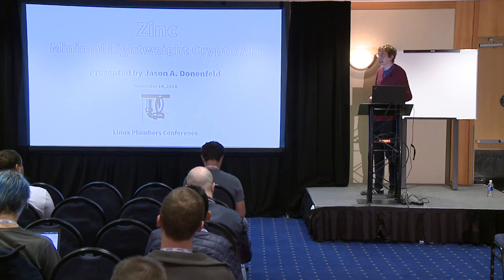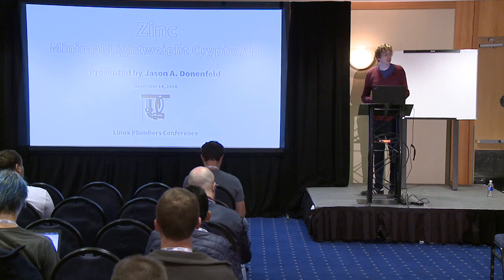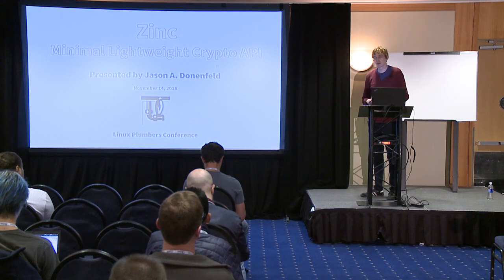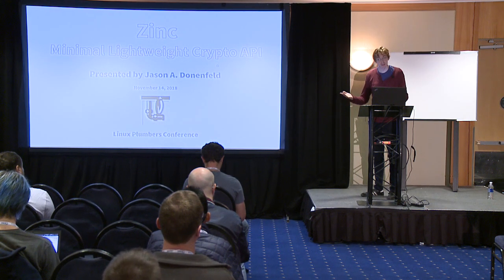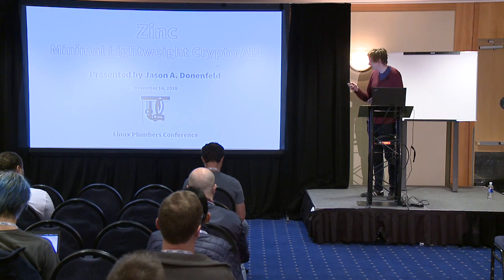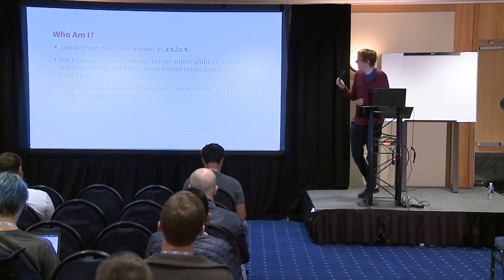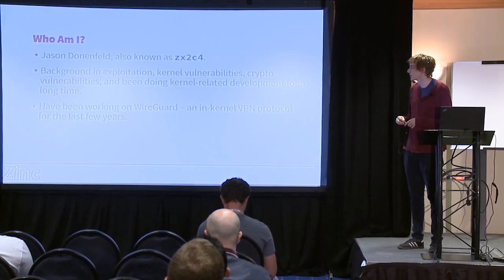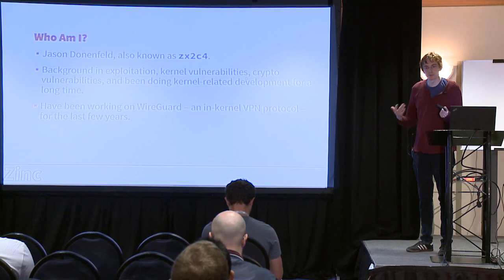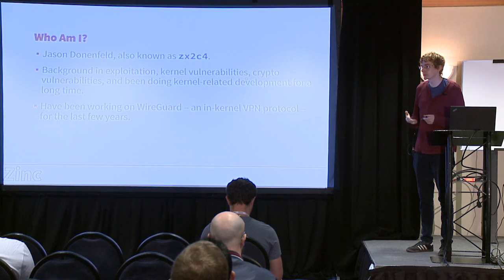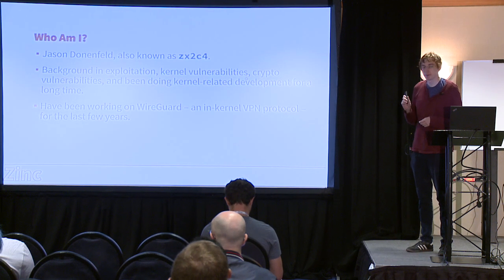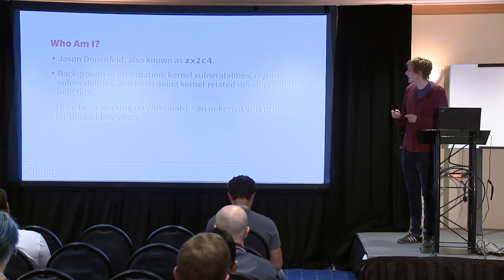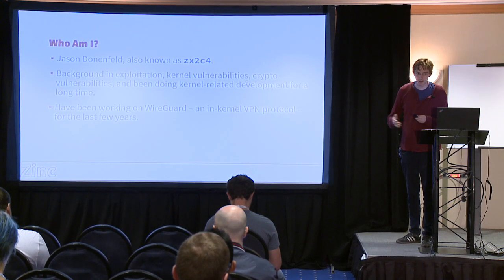This talk is on Zinc, a new crypto API for the kernel that is less of an API and more of a collection of functions. My name is Jason. My background is mostly in exploitation, kernel development, and crypto-related development. For the last couple of years I've been working on WireGuard, which is a next-generation kernel VPN protocol that has motivated this API.